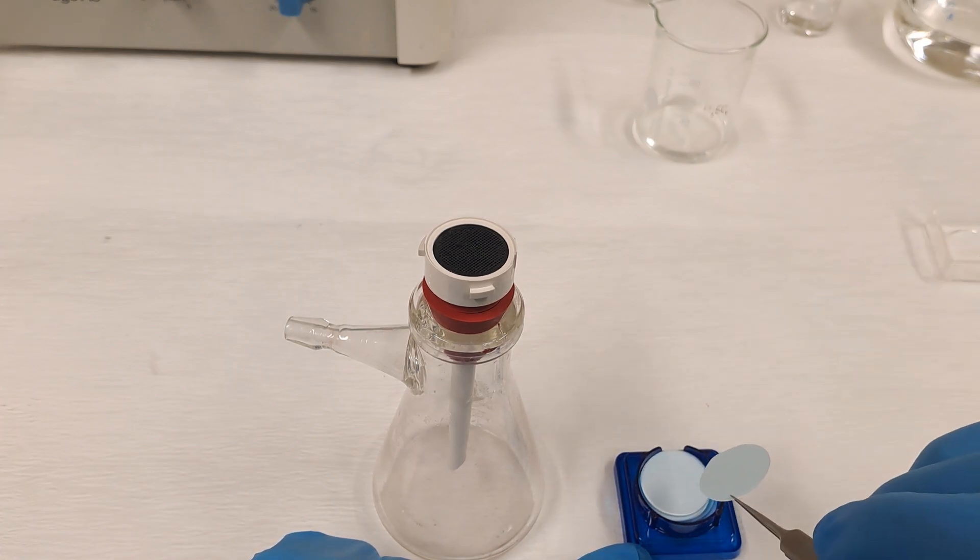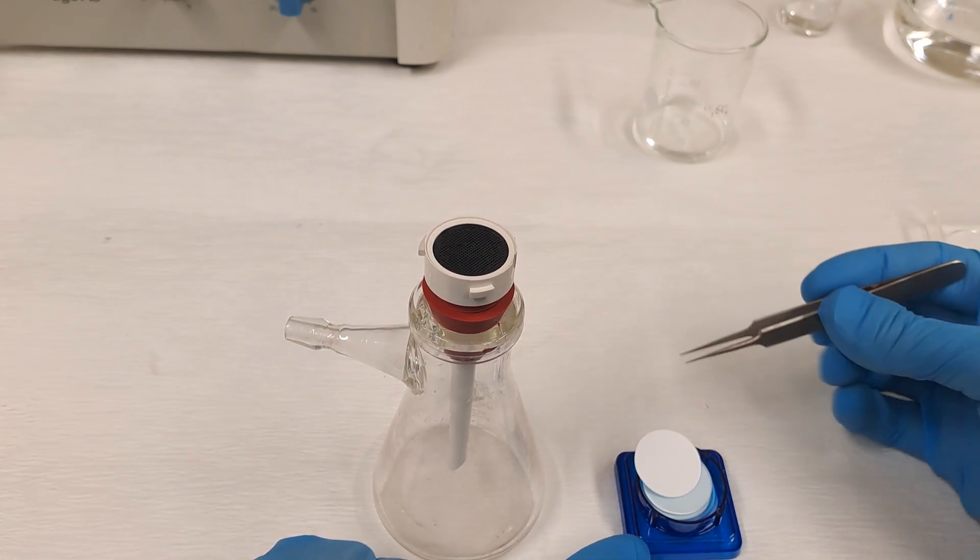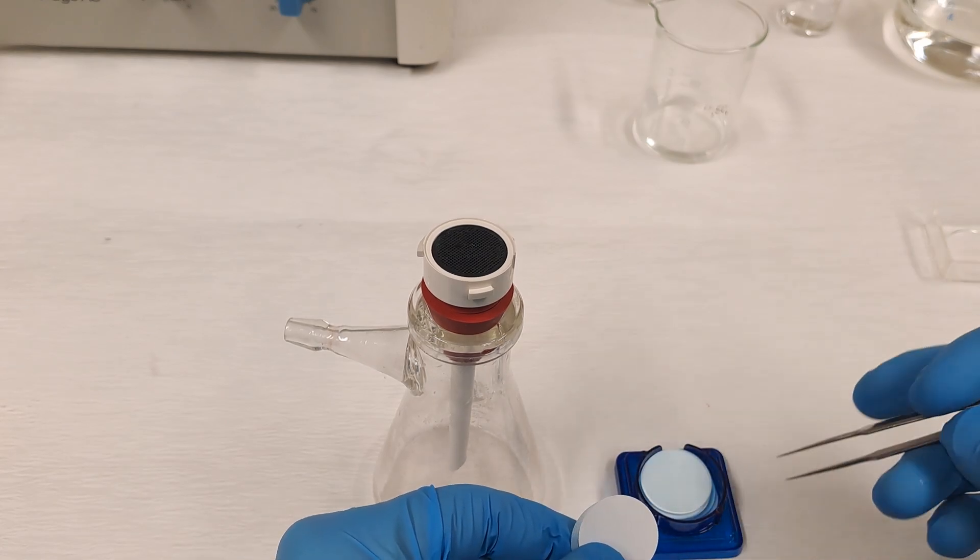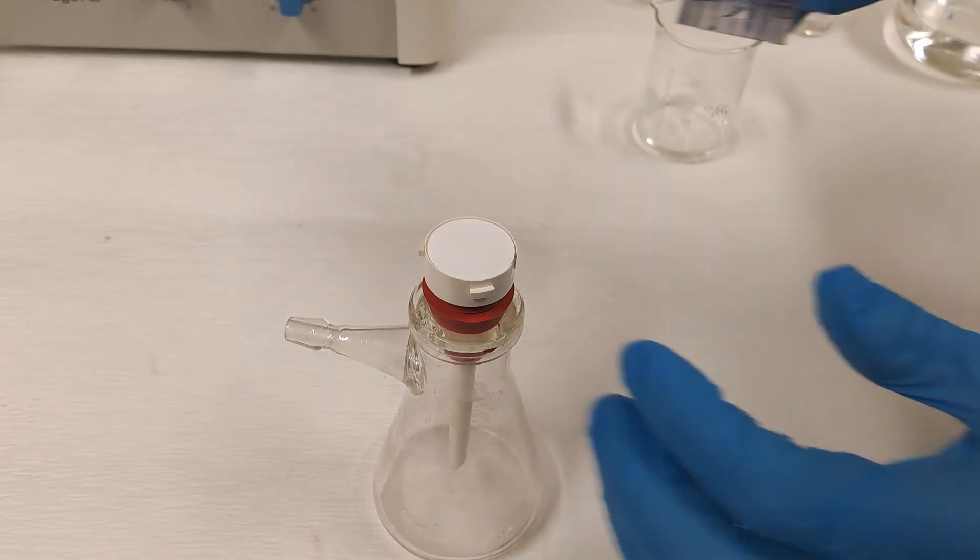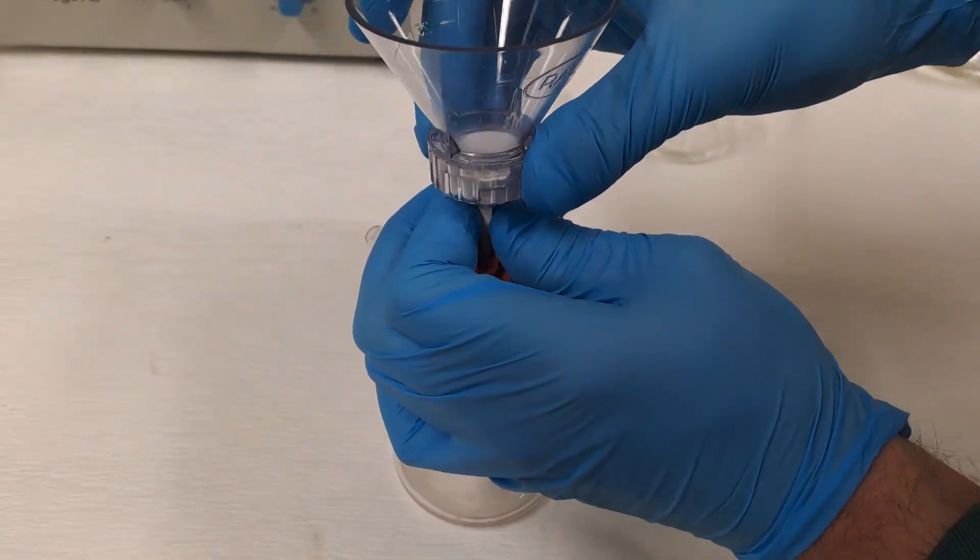The membrane filters are very fine and are separated in their packaging by these blue separator papers. Each filter has two separation papers, so make sure to remove also the bottom separator paper as well or the filtration won't work.